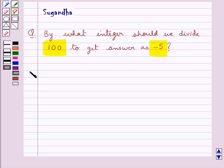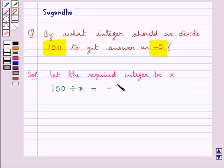Now we move on to the solution. Let the required integer be x. According to the question we have that when 100 is divided by x we get the answer as minus 5.